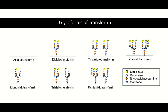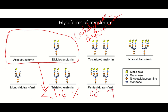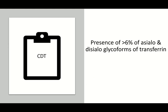Among these glycoforms, asialo-transferrin and disialo-transferrin are known as carbohydrate-deficient transferrin (CDT). Normally, the level of asialo-transferrin and disialo-transferrin is less than 1.6% of total transferrin. We say CDT is elevated when disialo and asialo forms are more than 6% of total transferrin.